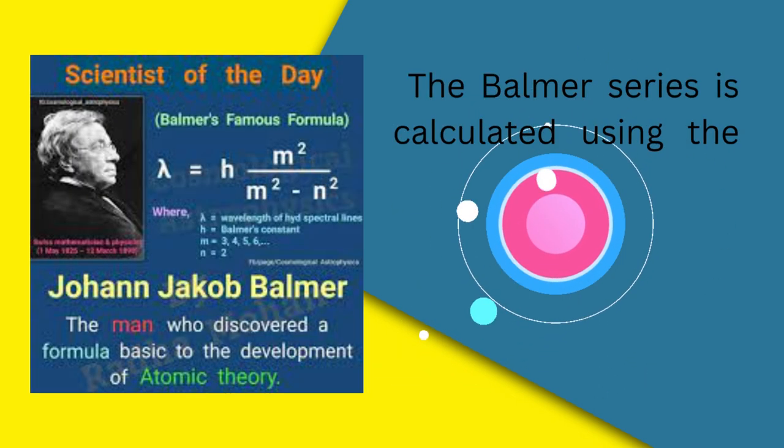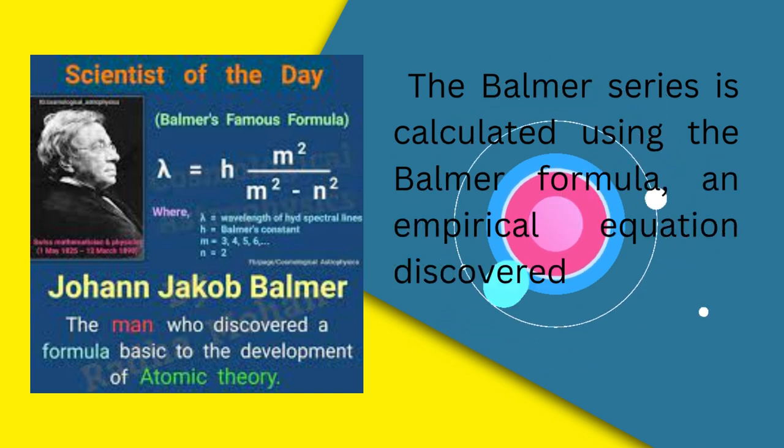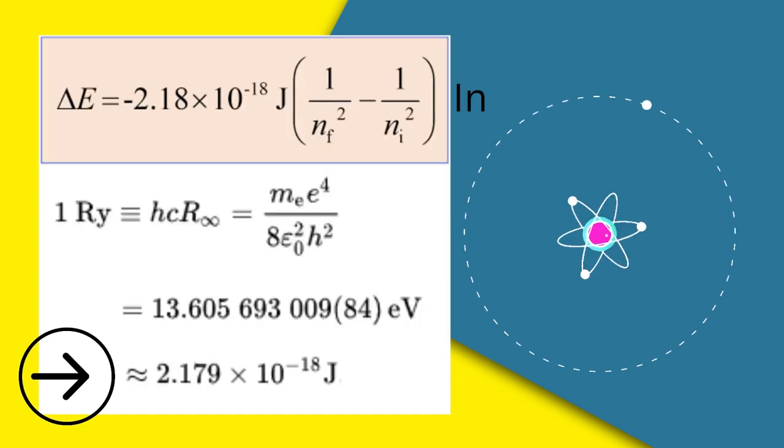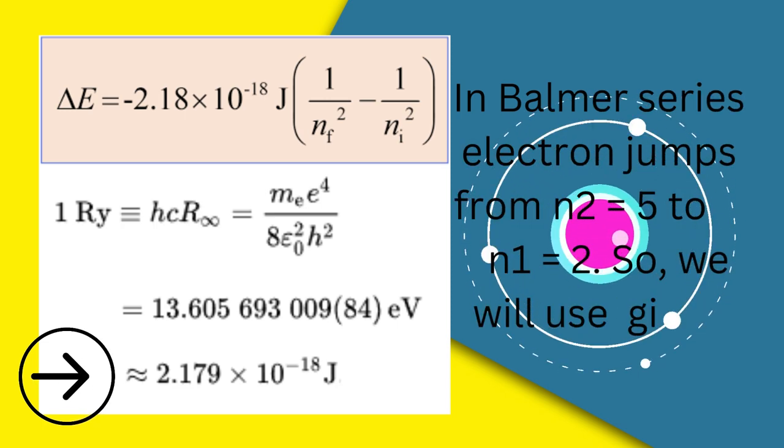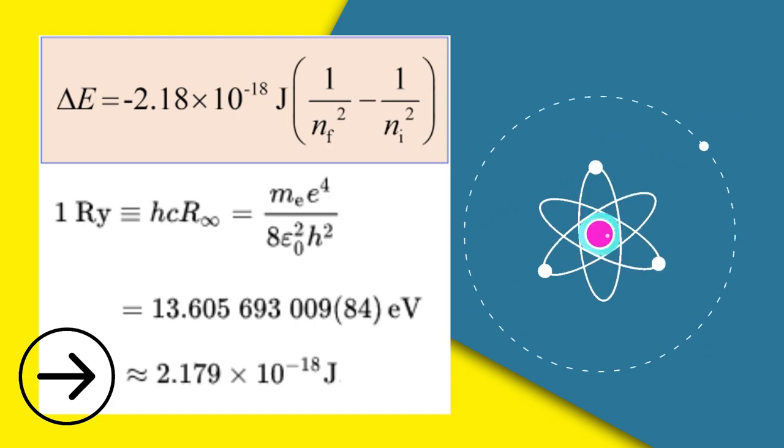The Balmer series is calculated using the Balmer formula, an empirical equation discovered by Johann Balmer in 1885. In Balmer series, the electron jumps from n₂=5 to n₁=2, so we will use the following formula.